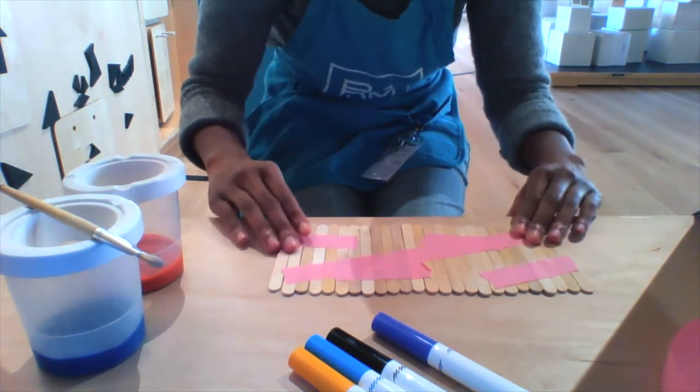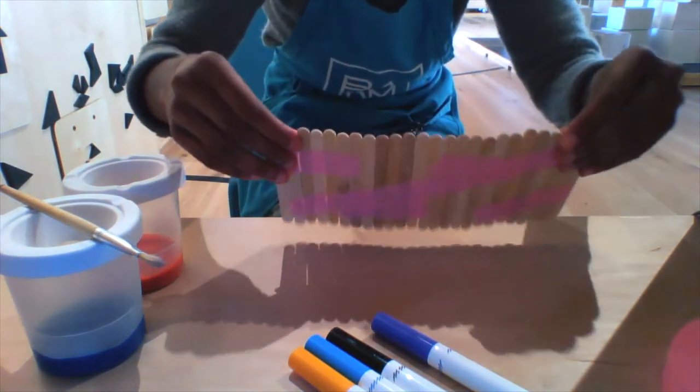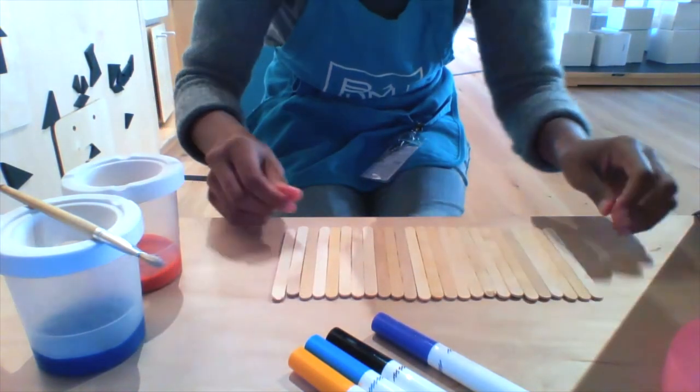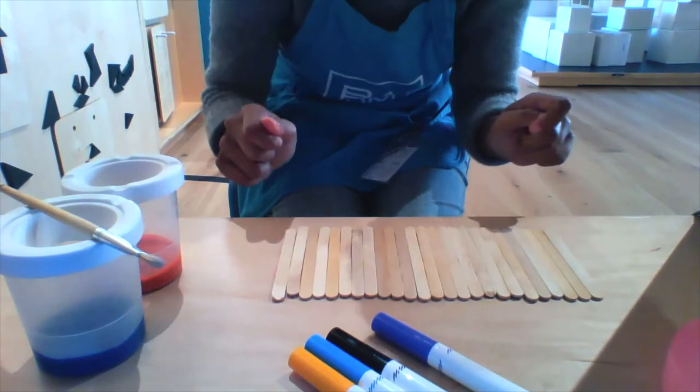Once that's done, we carefully flip over all the popsicle sticks so the tape is now on the back.